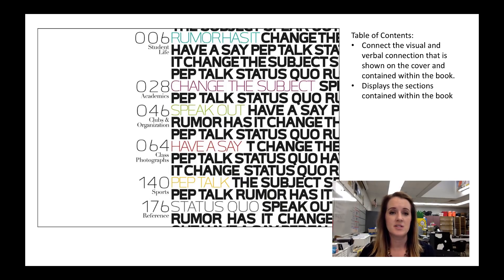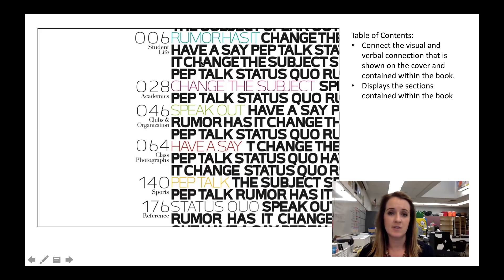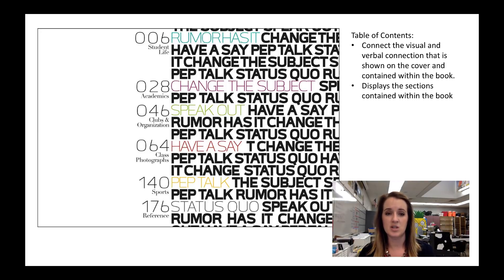Here we have the Table of Contents, printed on their end sheet. We can see a strong visual verbal connection — they've got the black and white design elements and they're reintroducing those color bars, but this time they have text in them. They're also using the same fonts again: the bold sans serif with the thinner line weight sans serif. The Table of Contents introduces the structure of the book for your reader so they know how many sections it will have. To tie in those sections with their theme of 'We're Something to Talk About,' their Student Life section is called 'Rumor Has It' and Academics is called 'Change the Subject.'